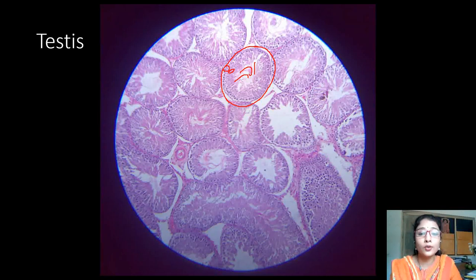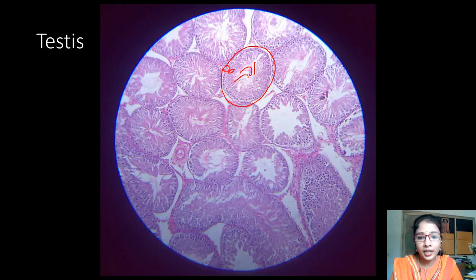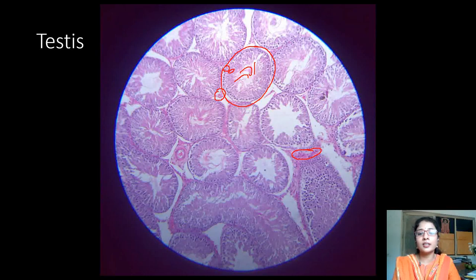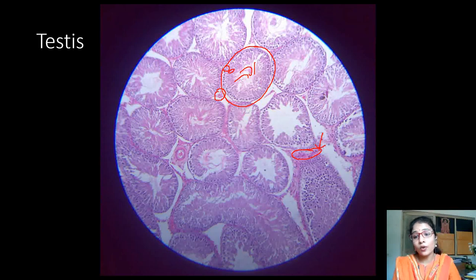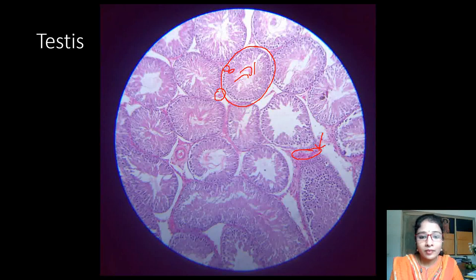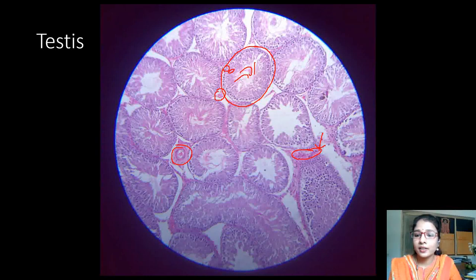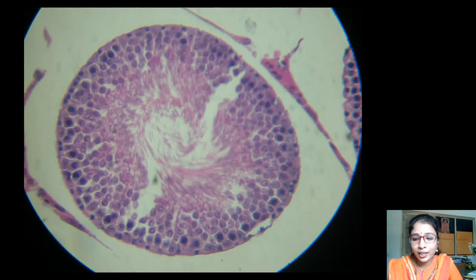In the lumen of the seminiferous tubule, we can see it is hazy and has some thread-like appearances — those are the tails of mature sperms present in the lumen. Apart from the tubule, in between the tubules we can identify some collections of cells outside the seminiferous tubule. This is a higher magnification of a seminiferous tubule.